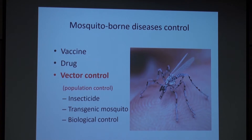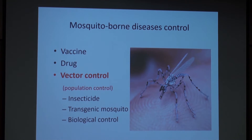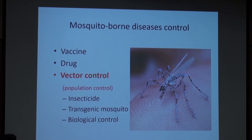Mosquito-borne disease control strategies mainly rely on three approaches. The first is to develop vaccines, but currently there is no effective vaccine for malaria, Dengue, or Zika. The second is to develop drugs, but there is no effective medication for Dengue and Zika either. So control strategy mainly relies on vector control. The traditional way is insecticide, but overuse of insecticide results in resistance, so several novel approaches have been proposed.